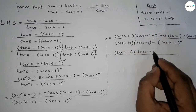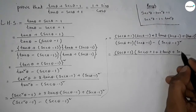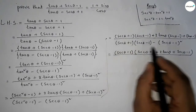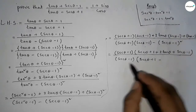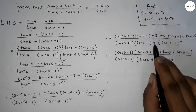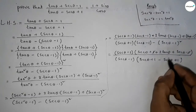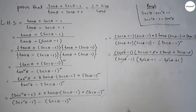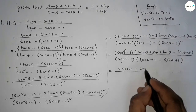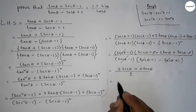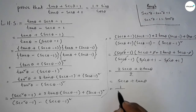From the numerator, we can take (sec θ - 1) as a common factor from all terms, giving (sec θ + 1) + 2·tan θ. Similarly from the denominator, take (sec θ - 1) common, giving (sec θ + 1) - sec θ, noting minus minus equals plus. Cancel (sec θ - 1) from top and bottom. The numerator simplifies to 2·sec θ + 2·tan θ and denominator to 2, giving sec θ + tan θ.